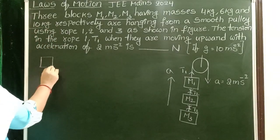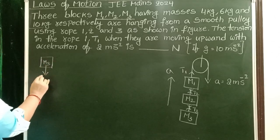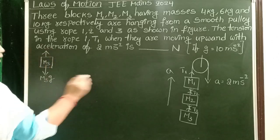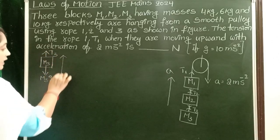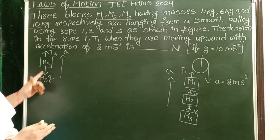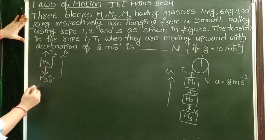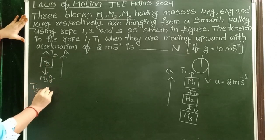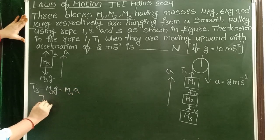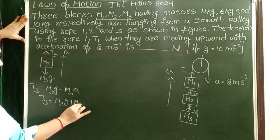First, take mass M3. Weight is acting in the downward direction, and the tensional force T3 is acting in the upward direction. The resultant acceleration is in the upward direction. Due to the difference of these two forces, this body is accelerating upward. So: T3 − M3G = M3A, therefore T3 = M3G + M3A. This is the formula to calculate tensional force T3.